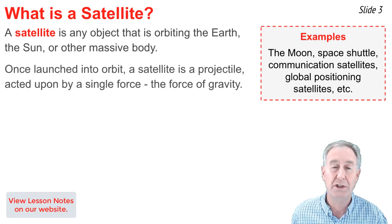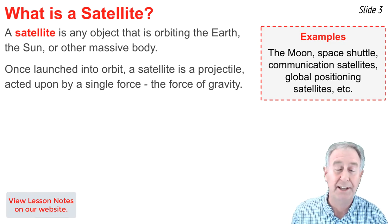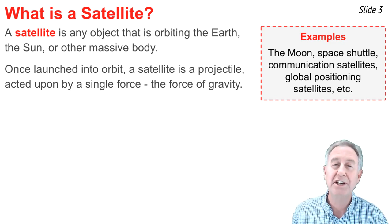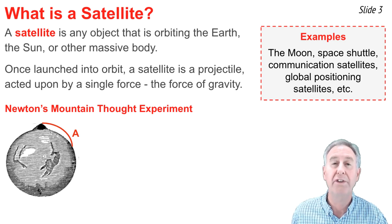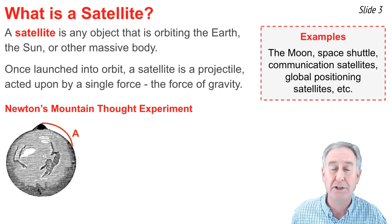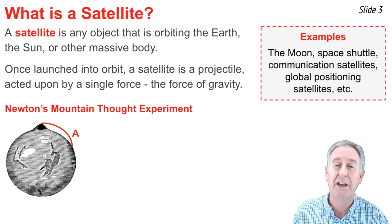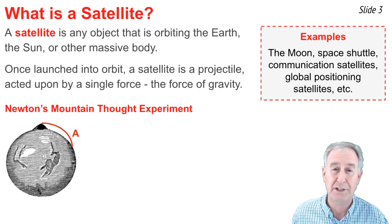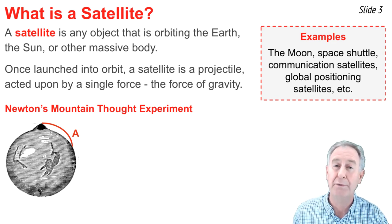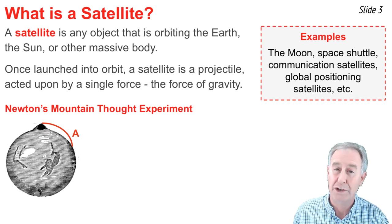Once a satellite is launched into orbit, it continues along its orbital path, acted upon by only one force, the force of gravity. In this sense, a satellite is a projectile. Isaac Newton popularized the so-called Newton's Mountain Thought Experiment. In his thought experiment, he imagined a very tall mountain whose top was sixty miles above the surface of the Earth, above the influence of air resistance. And on top of that mountain was a cannon that would shoot a cannonball at high speed horizontally.